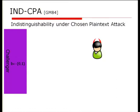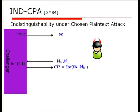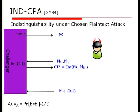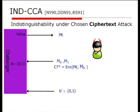For a long while, we've been able to formalize these notions of security in terms of games. In the IND-CPA game, the challenger first sends the attacker a public key. The attacker picks two messages M0 and M1 of equal length. The challenger flips a coin B, encrypts the message M_B under the public key — that's the challenge ciphertext CT star — and the attacker submits a guess B prime. The advantage is the probability that B equals B prime minus one half, and a scheme is considered secure if this value is negligible.